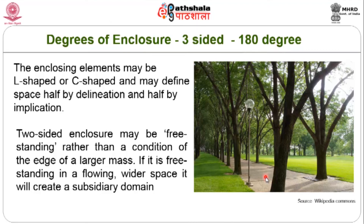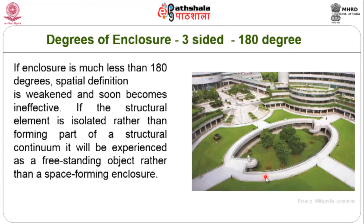A two-sided enclosure may be free-standing rather than at the edge of a larger mass; if free-standing in a flowing wider space, it creates a subsidiary domain. The final degree is the single object — less than 80 degrees — where a single element such as a sunken courtyard becomes the focal point, with all surrounding open space concentrated and attracted to that one object in the middle.